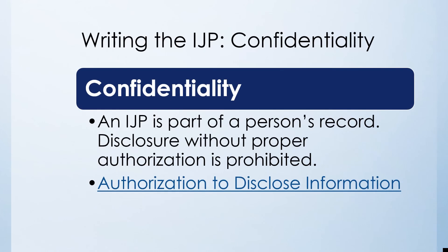Consistent with all records regarding a person with a disability, the IJP is a confidential document. It can be shared with others if proper written authorization has been provided. P&A has a sample authorization to disclose information available on their website at www.ndpanda.org.